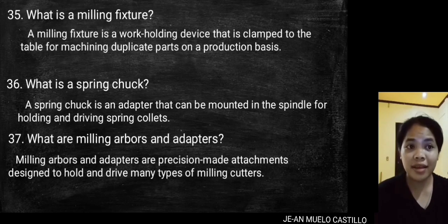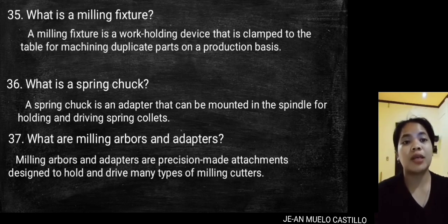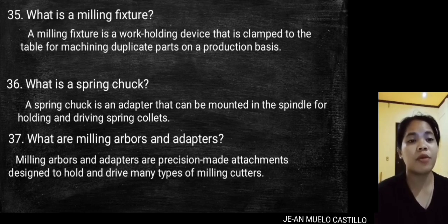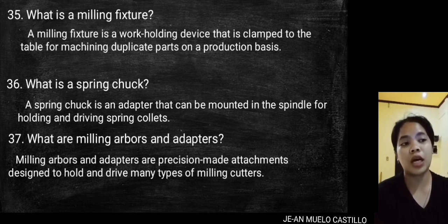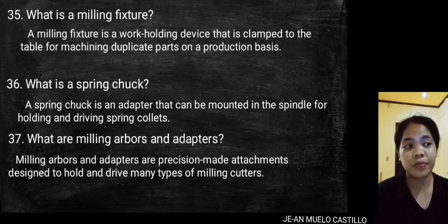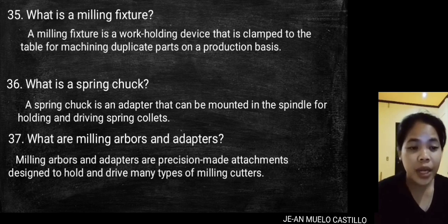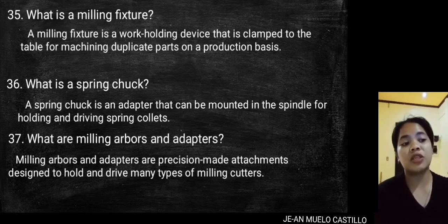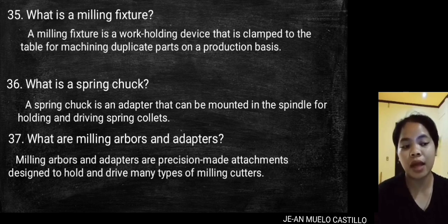What is a milling fixture? A milling fixture is a work holding device that is clamped to the table for machining duplicate parts on a production basis. What is a spring chuck? A spring chuck is an adapter that can be mounted in the spindle for holding and driving spring collets. Milling arbors and adapters are precision-made attachments designed to hold and drive many types of milling cutters.